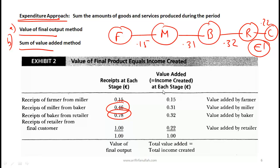Both methods give the same answer. In a manufactured exam scenario it should be fairly easy — simply adding. I can foresee an exam question where one answer is calculated by summing the receipts and another by looking at the value added in each process. Knowing how the CFA exam is structured, they will likely try to catch you on that distinction, because someone who hasn't studied this will simply add up all the prices along the supply chain. I'm placing a small bet that this will be one question on your exam.